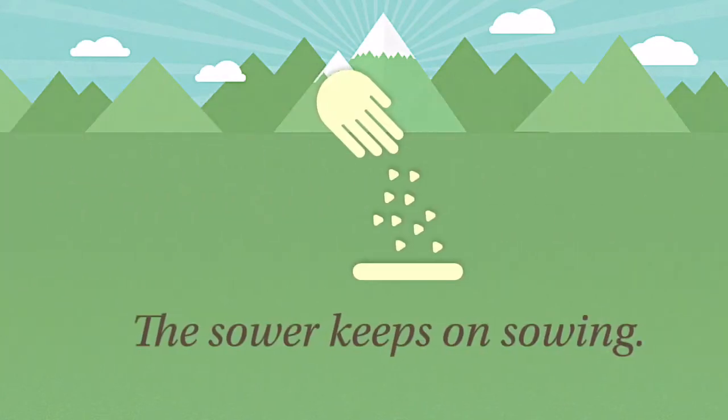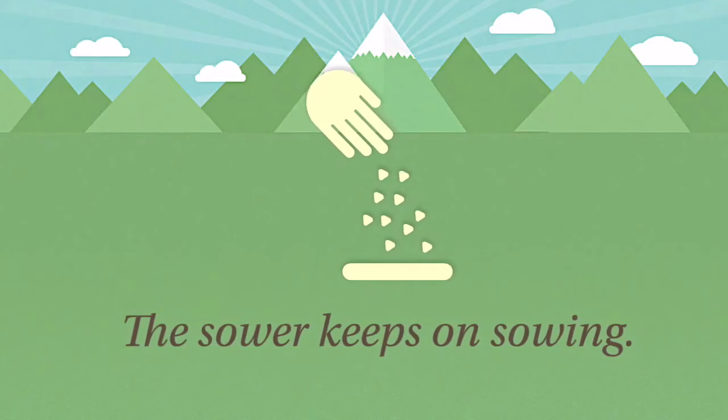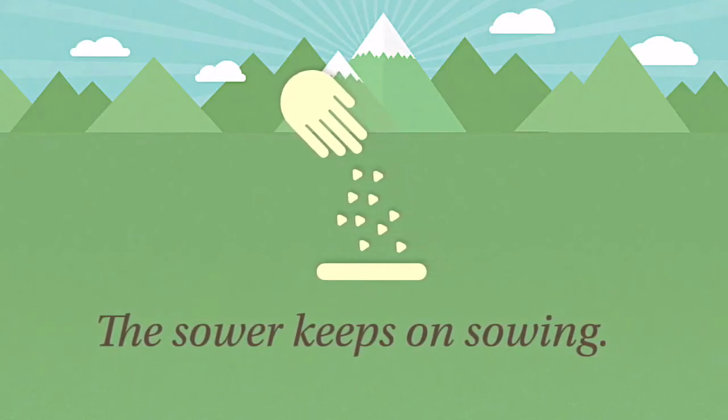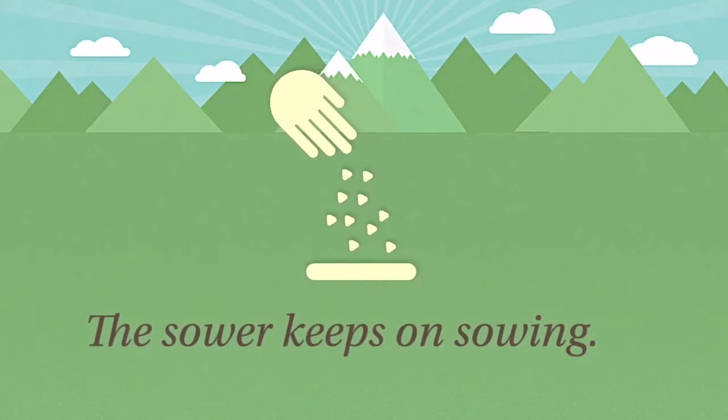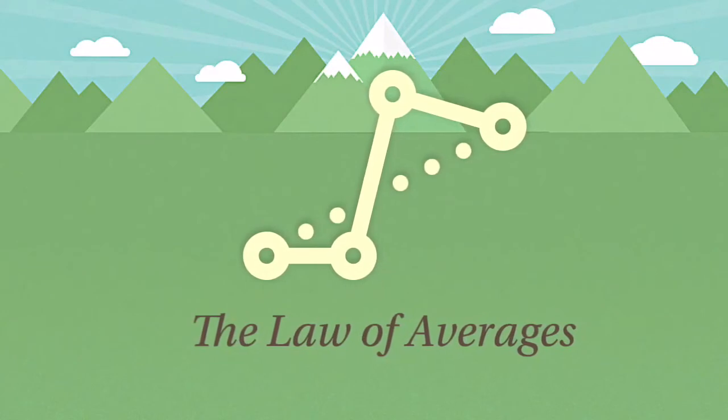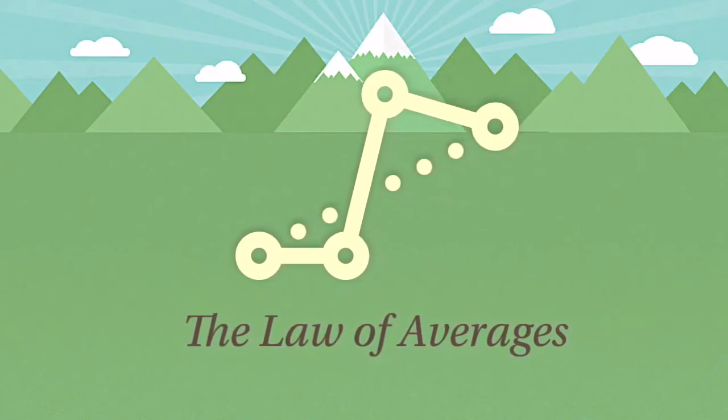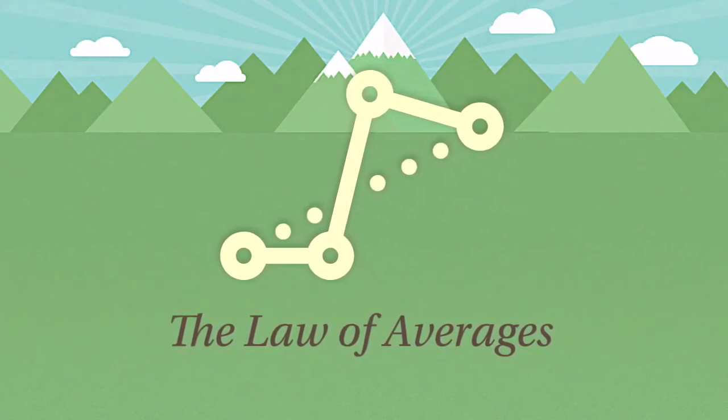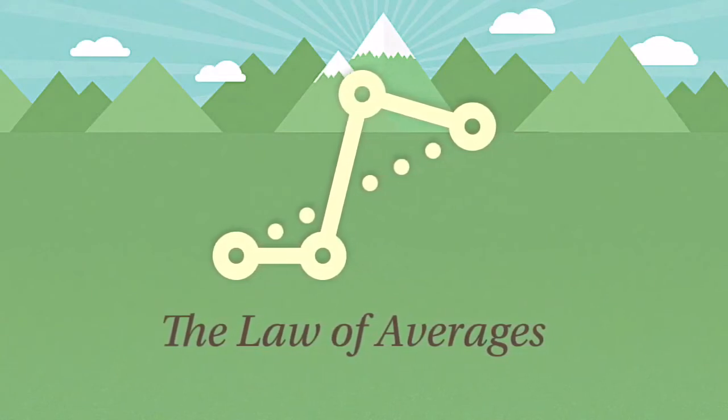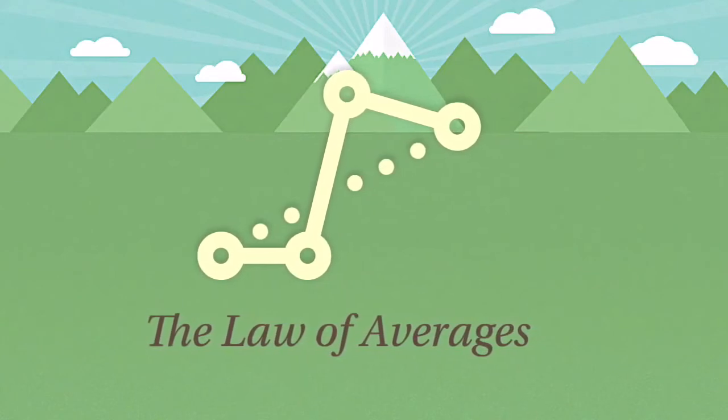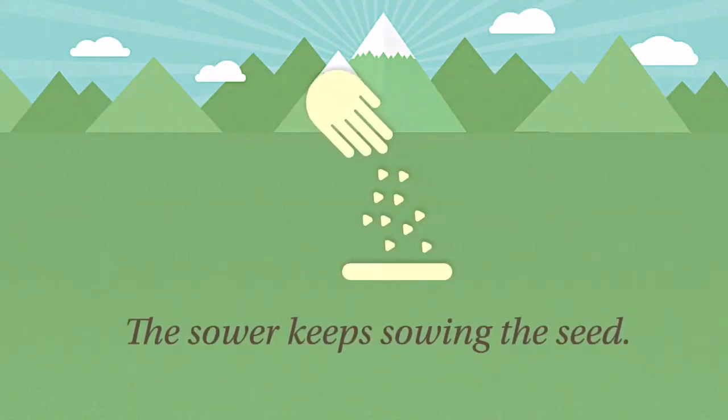Now here's the rest of the story. The sower kept on sowing. You see, that was the secret to his success. He kept on sowing. And if you keep sowing, you can sow more than the birds can get, because there aren't enough birds. If you keep sowing, there are always some birds, but there's not enough, because the law of averages will work for you.